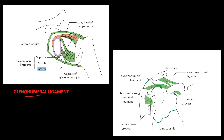Next we look at the glenohumeral ligaments. The capsular ligament has thickened strength ligaments on its anterior aspect. Looking at the anterior ligament, there are superior, middle, and inferior glenohumeral ligaments. The inferior glenohumeral ligament is most important in anterior dislocation of the shoulder.